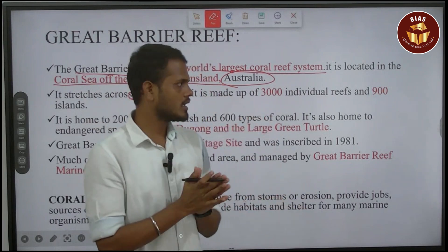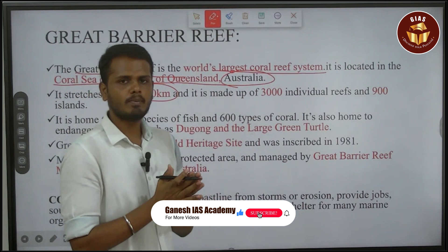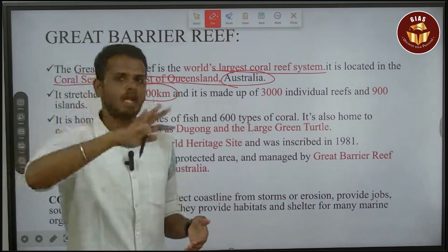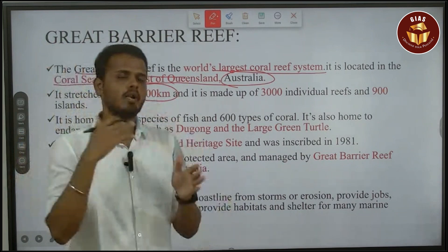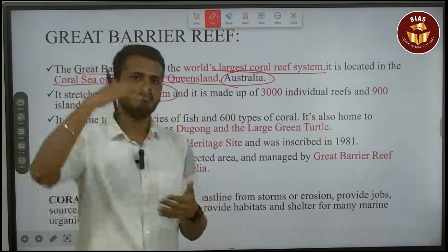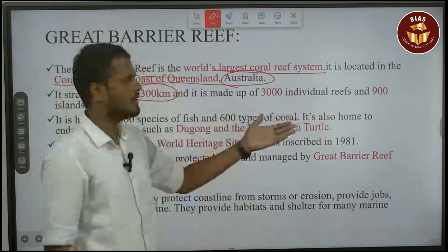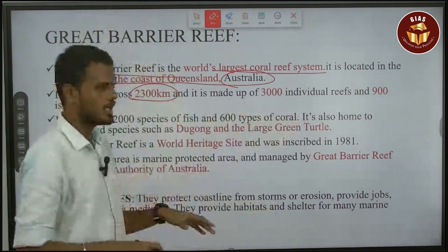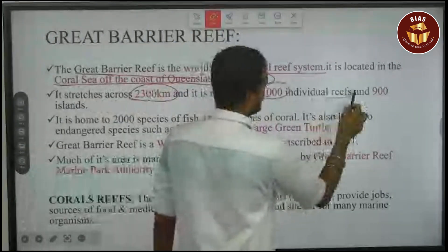The Great Barrier Reef is also visible from space. You can see it from the Karman line, above 400 km. It has a vast area with 3,000 individual reefs.